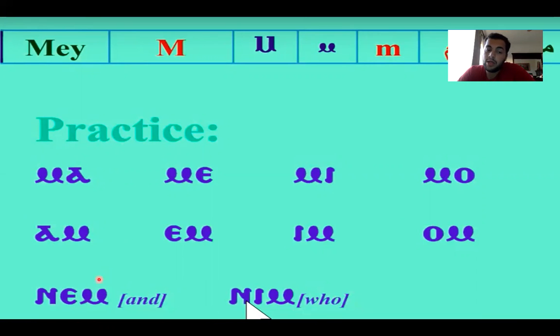Always be careful to not pronounce the E as an I and this as an E. This makes an E sound. This makes an I sound. So one more time, everything together.